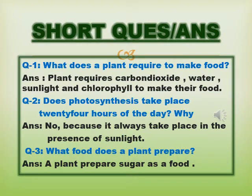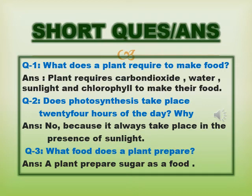After the long question answer, you will do short answers on the very next page. Question number 1: What does a plant require to make food? A plant requires carbon dioxide, water, sunlight, and chlorophyll to make food. Question number 2: Does photosynthesis take place 24 hours of the day? No, because it always takes place in the presence of sunlight. Question number 3: What food does a plant prepare? A plant prepares sugar as food.